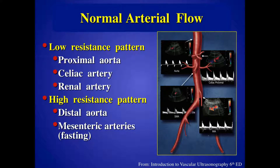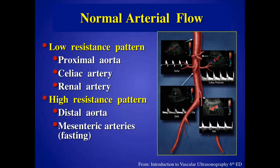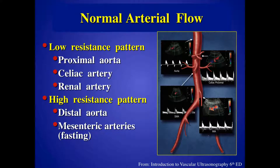When we talk about the celiac and the renal arteries, they provide blood flow to those high metabolic organs — the liver, the spleen — which, like the brain, demand continuous forward flow throughout the cardiac cycle. So you expect to see lots of forward diastolic flow, no flow reversal. There should always be forward diastolic flow — same with the celiac, the renal, and the proximal aorta. In contrast, the mesenteric arteries — the SMA and the IMA — are high resistance in the fasting state, so we see little diastolic flow and sometimes a little bit of flow reversal.